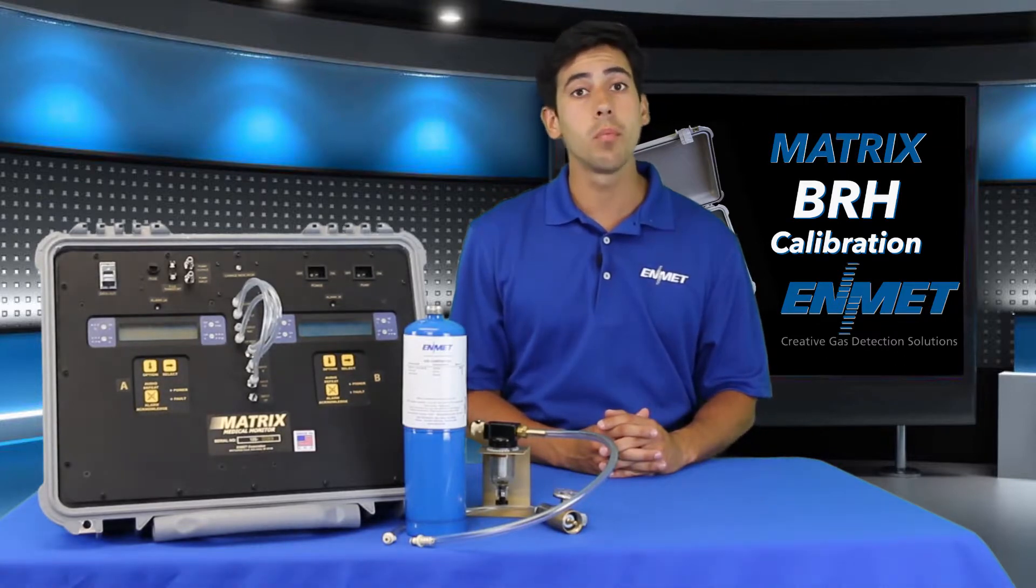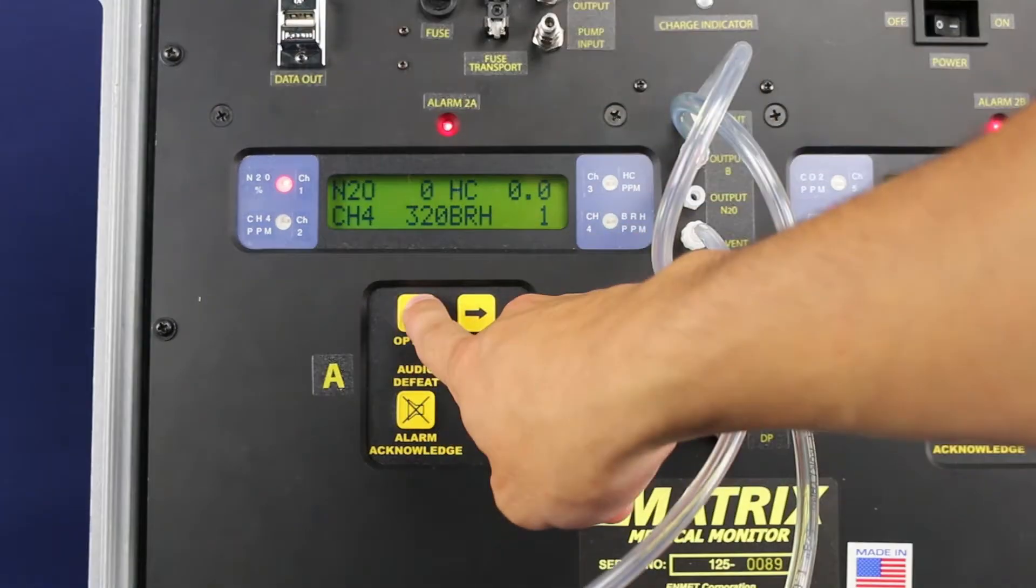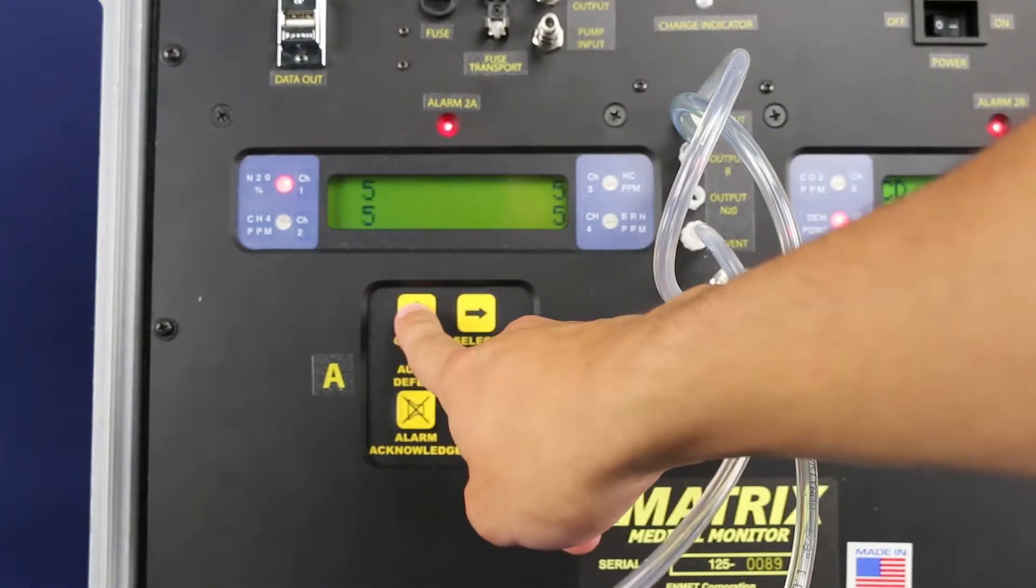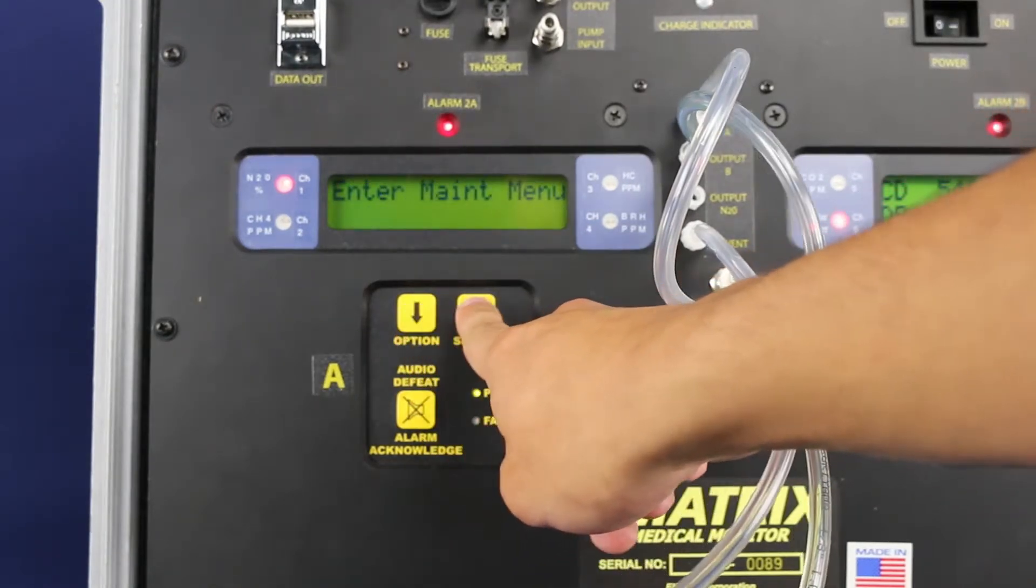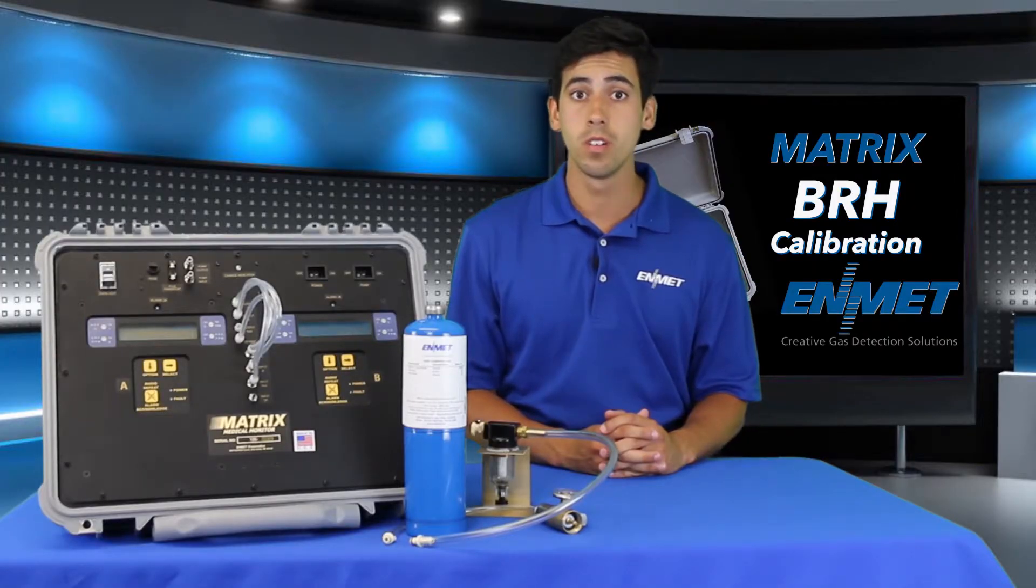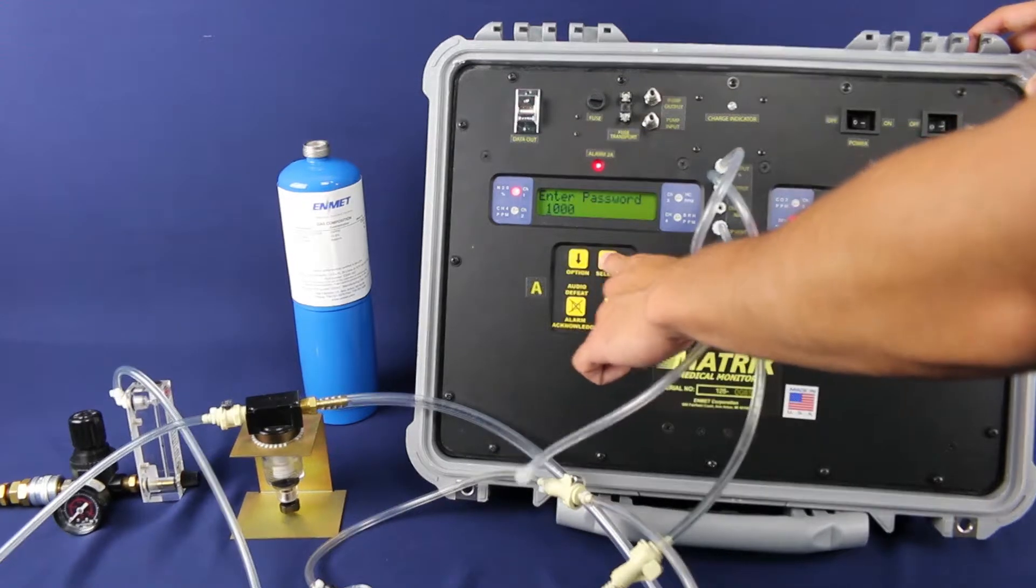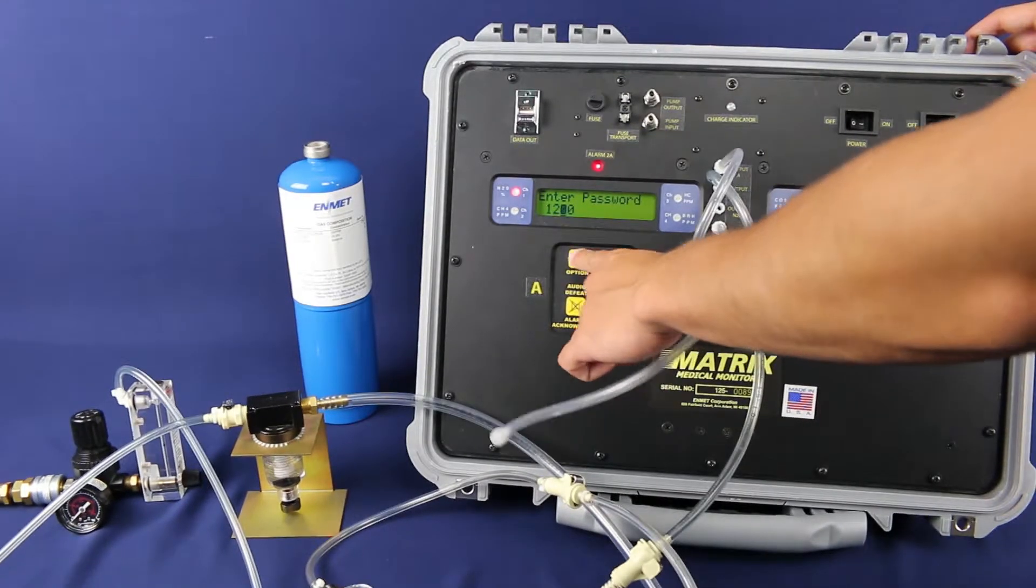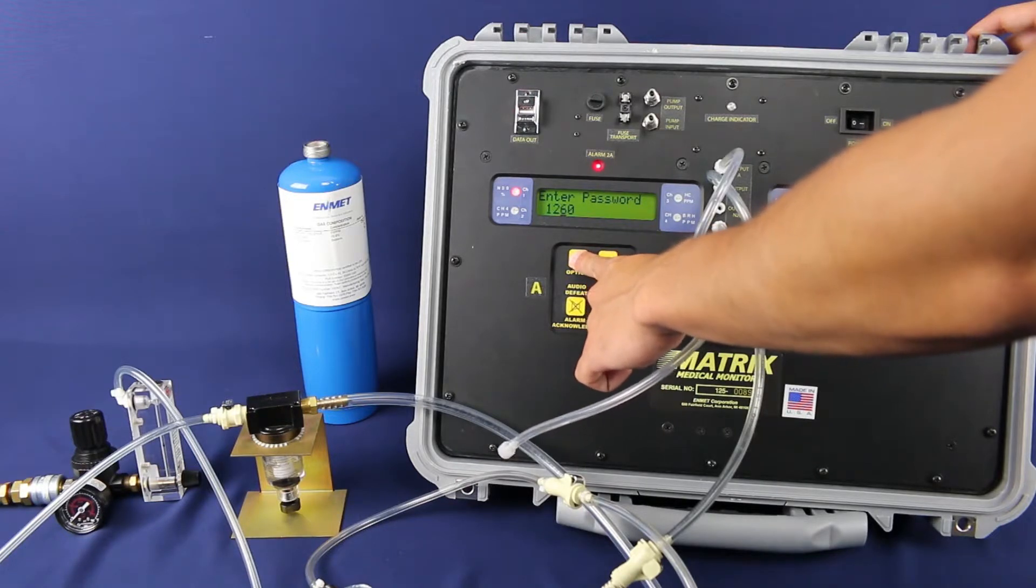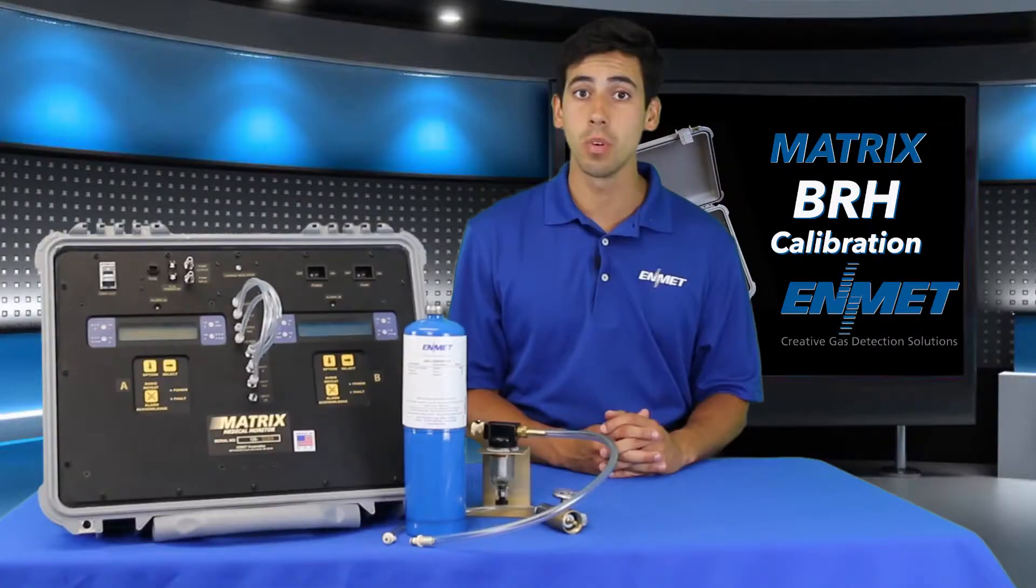To begin the calibration procedure, you'll first need to enter the maintenance menu. Press the option button until enter maintenance menu is displayed, then press select to enter the maintenance menu. The password you need to enter is 1270, which is the default password. If that one does not work, you may want to try 3663, which is the alternative password.